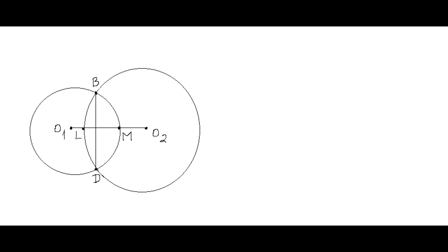Let's use a creative method of constructing the configuration described in this problem. Draw two arbitrary circles that intersect at points B and D — the two ends of diagonal BD of quadrilateral ABCD. The line through the two centers O1 and O2 is the perpendicular bisector of segment BD and the axis of symmetry of the two circles. Points L and M are the intersections of these two circles with line O1O2 that are closer to segment BD.